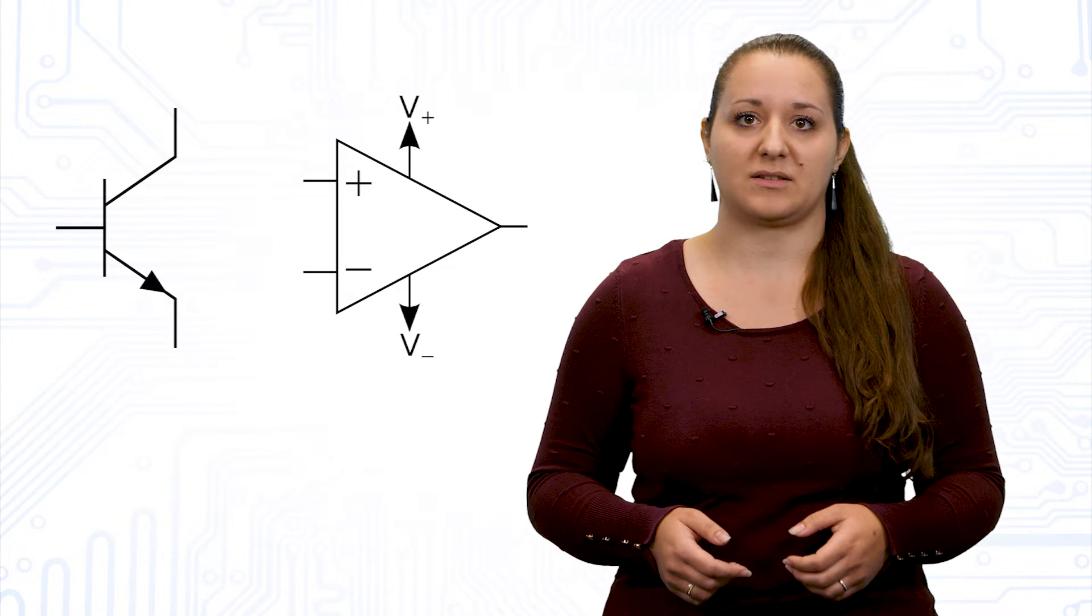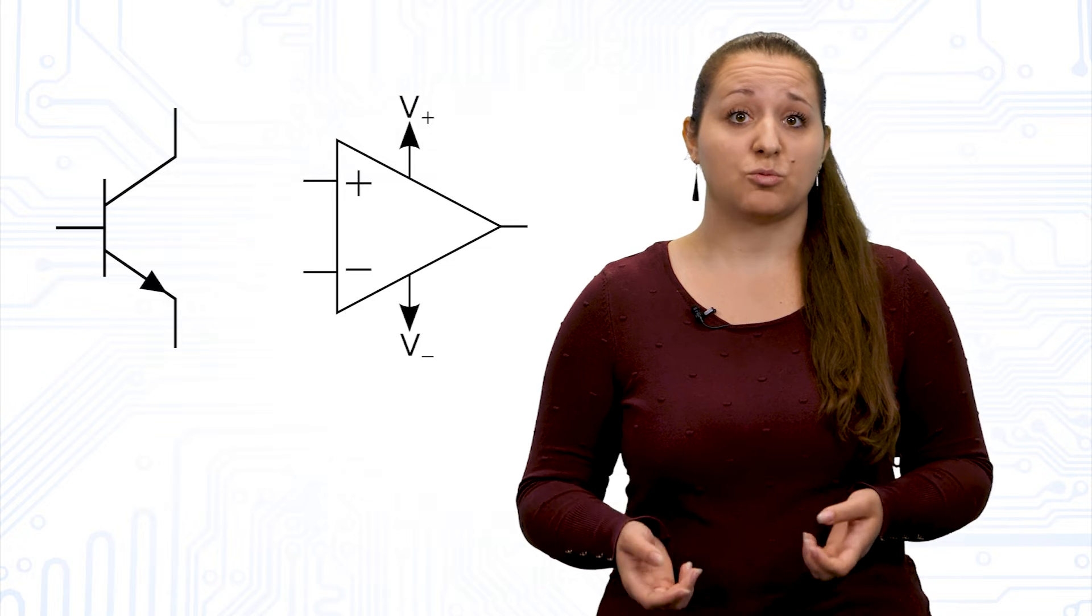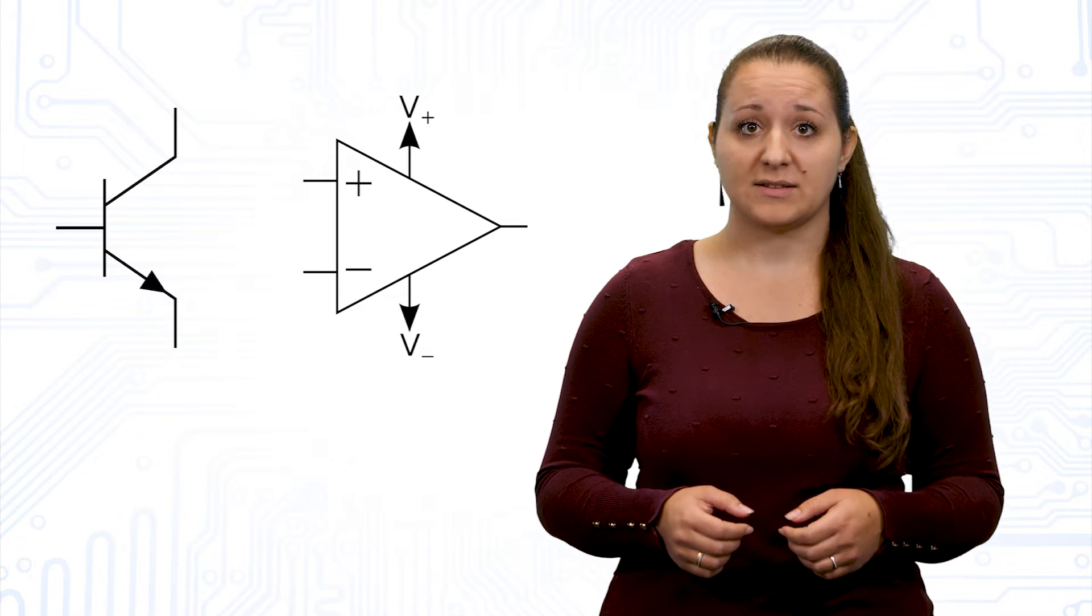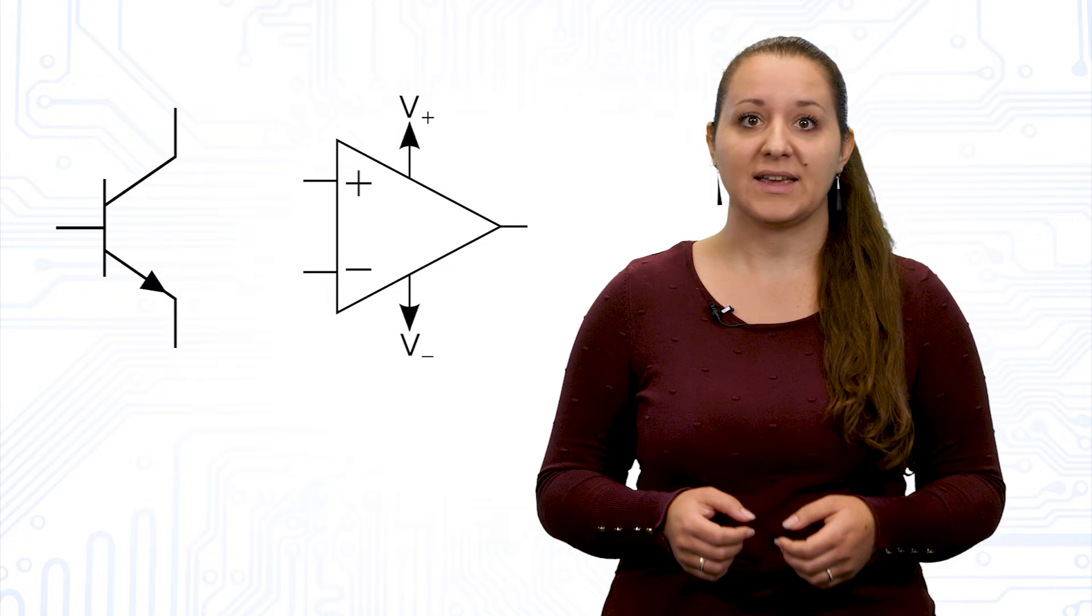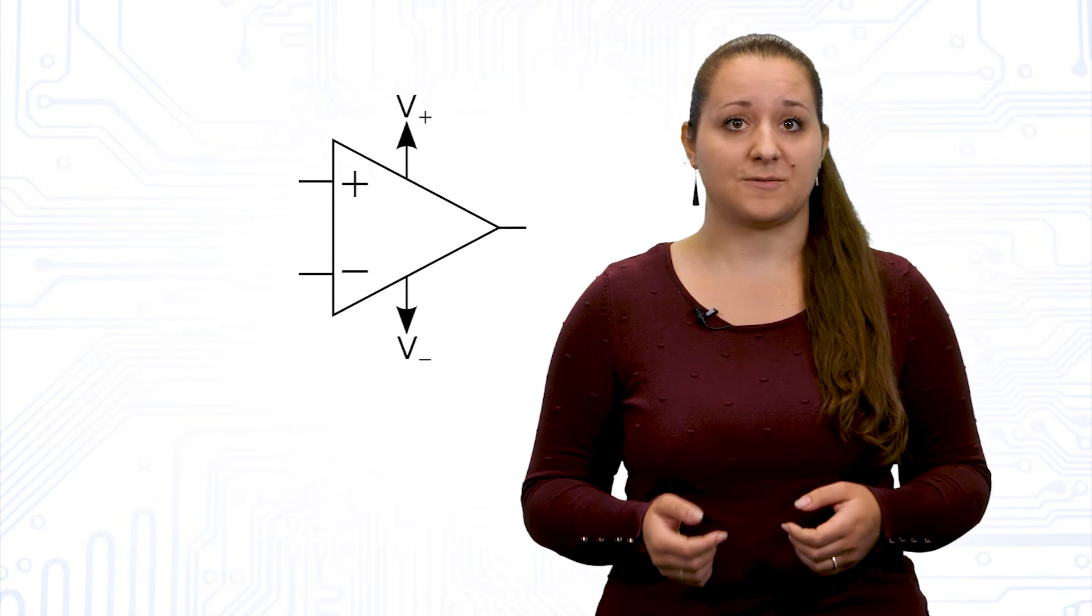Let's first start with some basics about active filters. I have already mentioned that active filters also contain active components. These can, for example, be transistors or operational amplifiers. In this video, we will deal with filter circuits that use operational amplifiers as active components, as single transistor active filters are very uncommon in electronics.